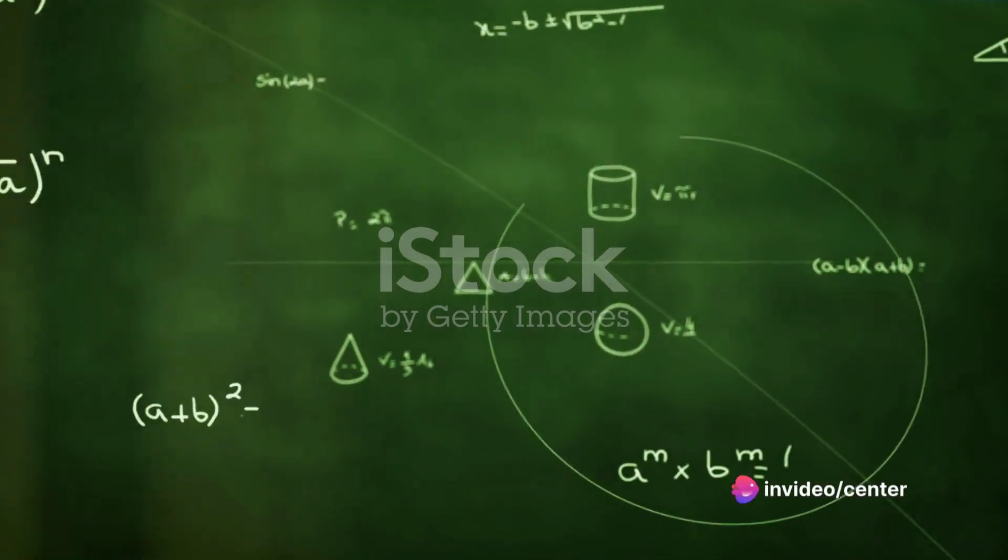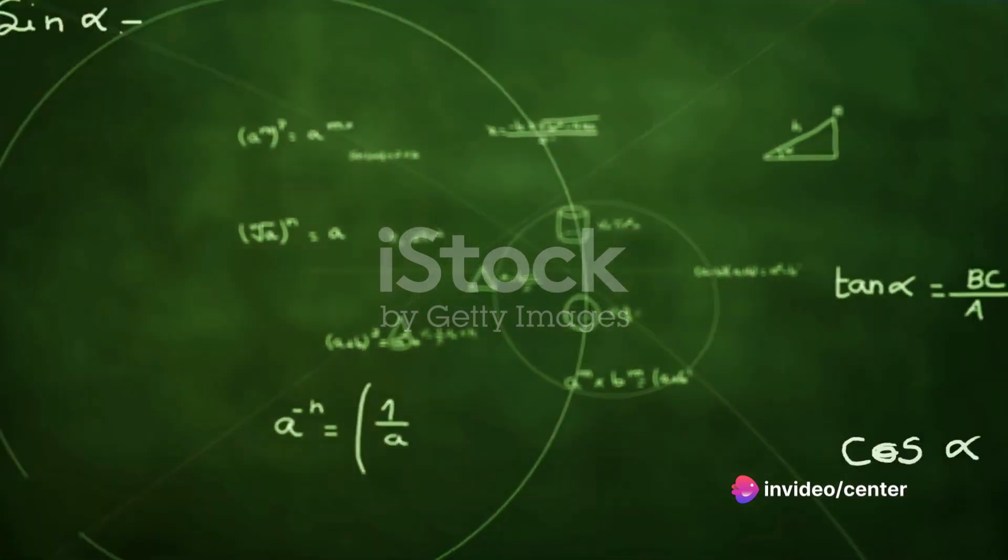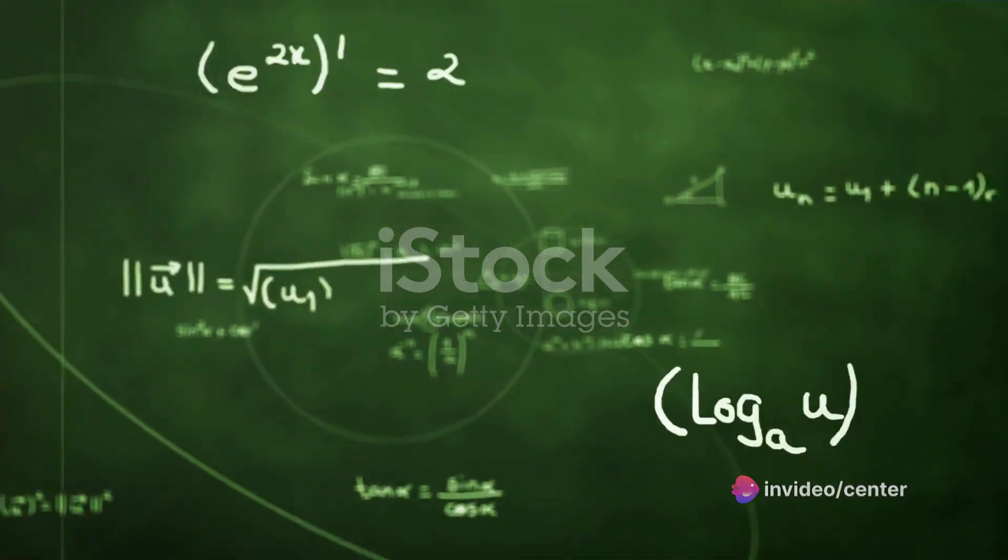If we were to write it down, it would look something like this: A dot B equals A1 times B1 plus A2 times B2 and so on up to An times Bn. Seems straightforward, right? But that's not all.